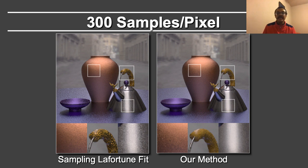So in summary, I have told you how BRDFs can fit in the general framework of Monte Carlo path tracing and multiple importance sampling through a simple abstract interface involving evaluation, sampling, and PDF evaluation. I've also shown you how the research on importance sampling of BRDFs is still a relatively recent and active area.